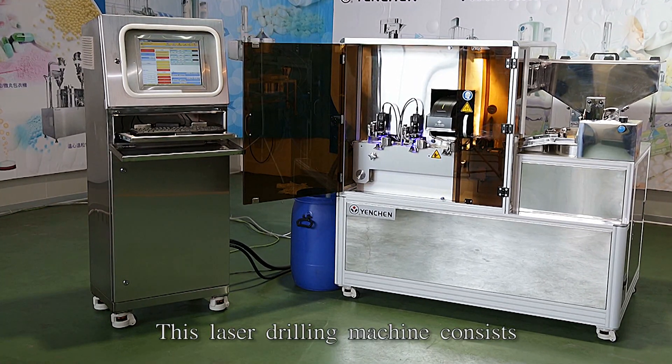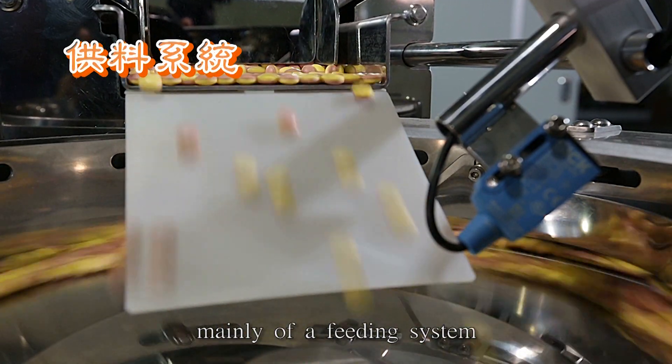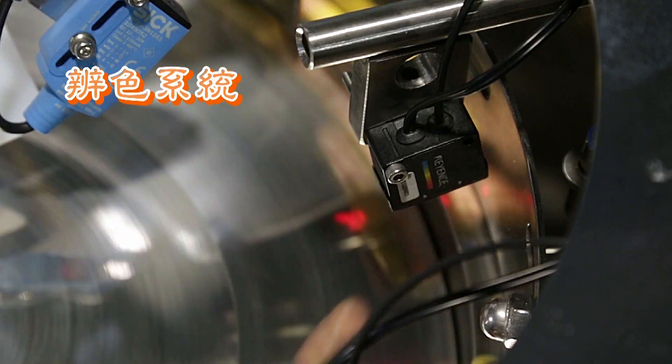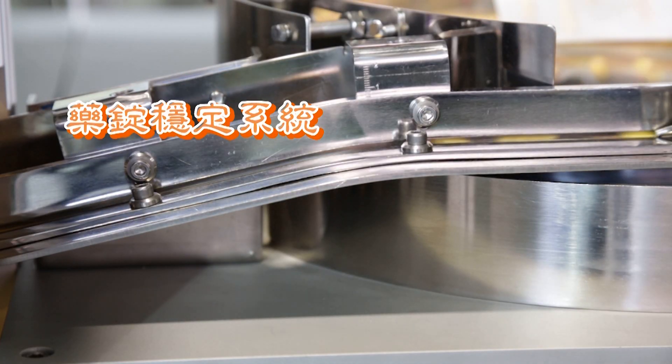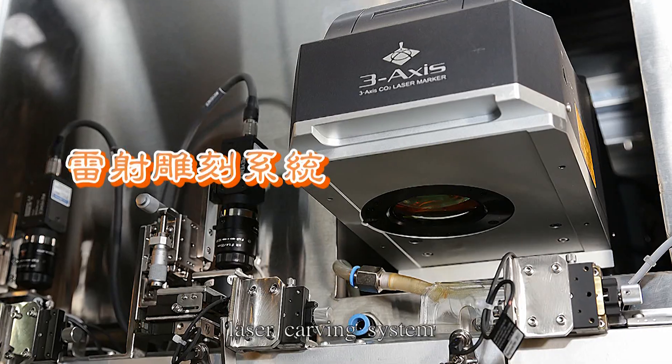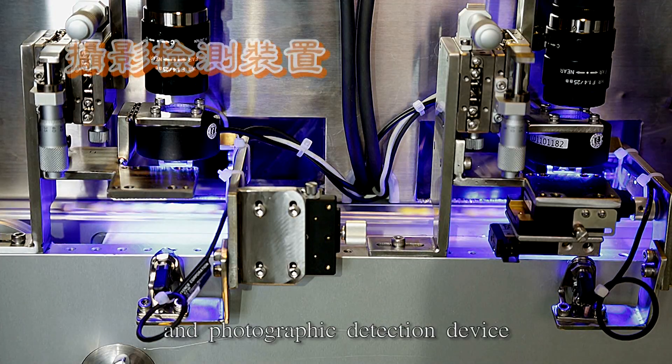This laser drilling machine consists mainly of a feeding system, color vision, positioning system, laser carving system, and photographic detection device.